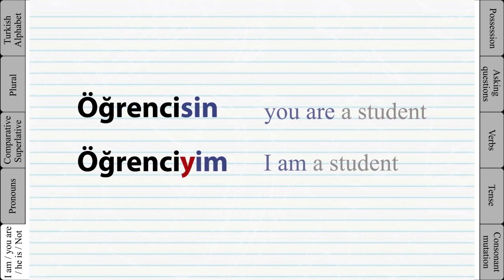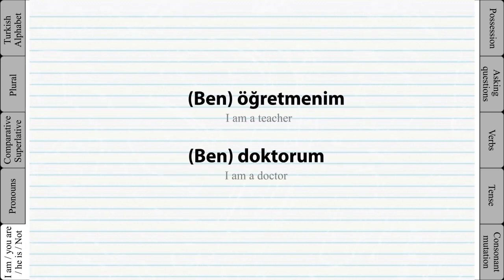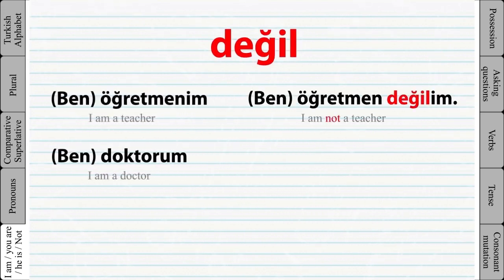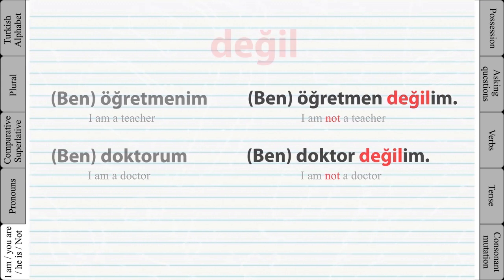We learned how to say 'I am a student' and 'I am a doctor.' Now to say 'I am NOT a student' or 'I am NOT a doctor,' we simply add the word 'değil' between the word and the personal ending. Because the last vowel of the word 'değil' is E, we add all the suffixes after the word 'değil,' so they will always be in the same vowel group.